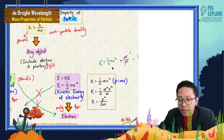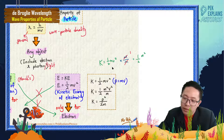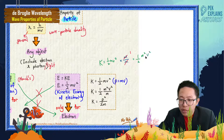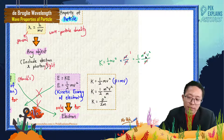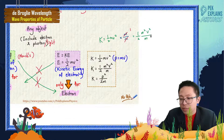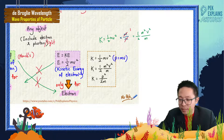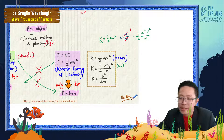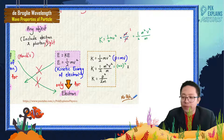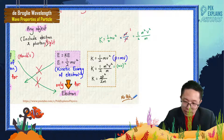After multiplying by m/m, we get K = ½ × m²v² / m. Since m²v² is actually (mv)², and p = mv, we can substitute to get p² in the numerator. This gives us the new formula: K = p² / 2m.